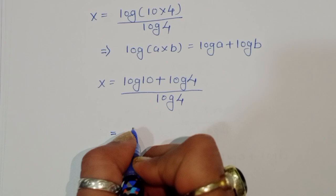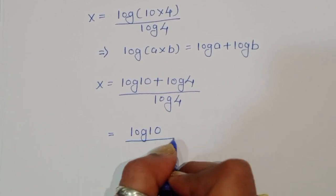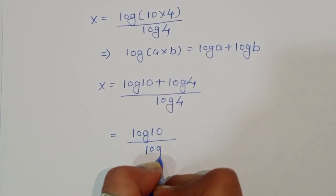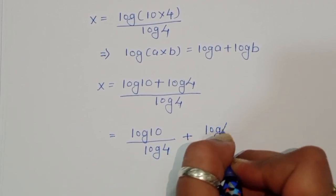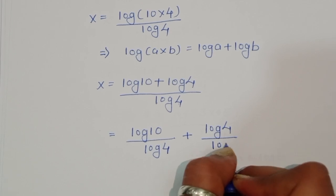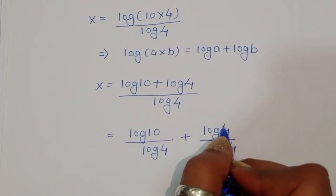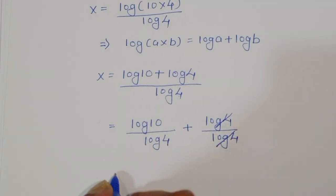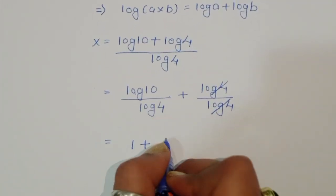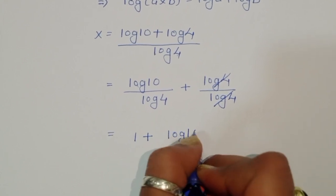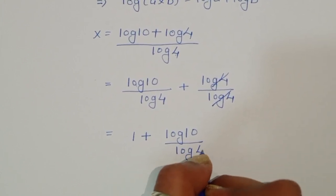Now we separate the terms: x equals log of 10 divided by log of 4 plus log of 4 divided by log of 4. The log of 4 over log of 4 cancels to give 1, so we can write this as 1 plus log of 10 divided by log of 4.